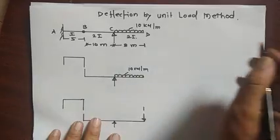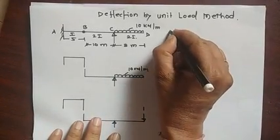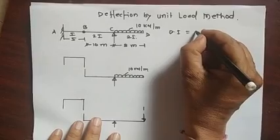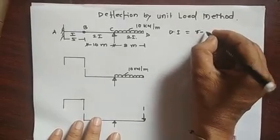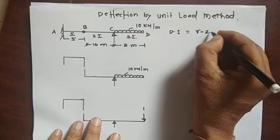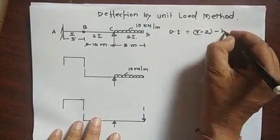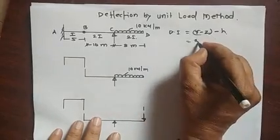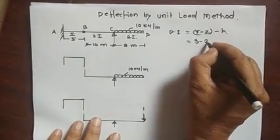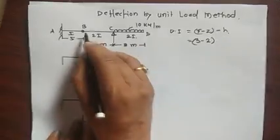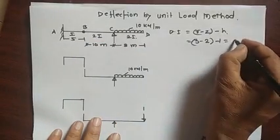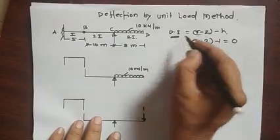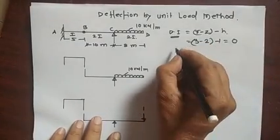To find the degree of indeterminacy (DI): DI = r - 2 - h, where r = 3, so 3 - 2 - 1 (hinge) = 0. This confirms the structure is a determinate structure.